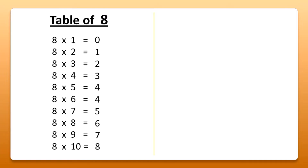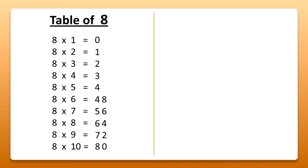For the unit place number of the answer, we will start from the bottom: 0, 0 plus 2 is equal to 2, 2 plus 2 is equal to 4, 4 plus 2 is equal to 6, 6 plus 2 is equal to 8, again 0, 2, 4, 6, 8. Now ready the table of 8.